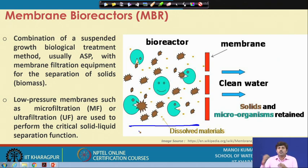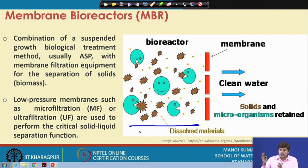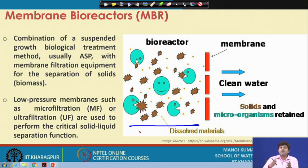Because the secondary clarifier may not be very efficient, we may still get some solids washing out in the effluent, and we also have to recycle the sludge back to the activated sludge system. In a MBR, instead of going for a secondary settling basin, a semi-permeable membrane is put in place which allows water to pass through but retains the solids. Since we are dealing with wastewater, high-end membranes like RO or nano filters are not used — instead, microfiltration or ultrafiltration membranes are used.